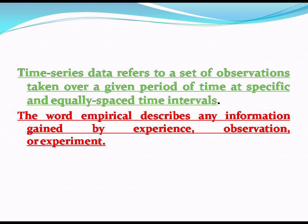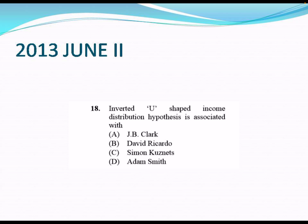Time series data, on the other hand, covers different time periods with one parameter taken into account. It is a set of observations taken for a given period of time at specific, equally spaced time intervals. The word 'empirical' refers to information that is gained by experience, observations, and experiments.